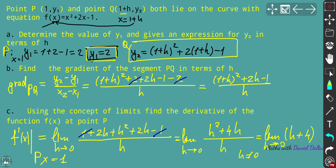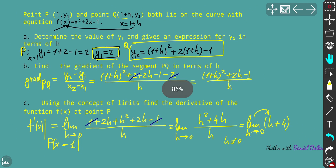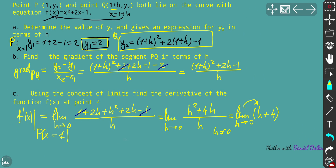To find the gradient — the derivative — at point P, we apply the limit and set h = 0. There is no violation of ordinary operations here. So f'(1), the derivative at point P, equals 0 + 4 = 4. That's the final solution to this problem.